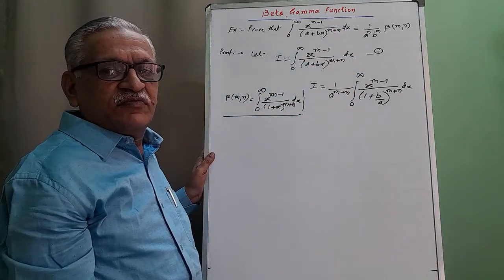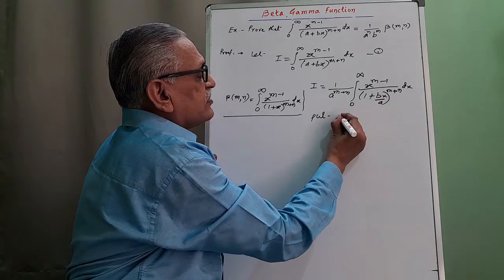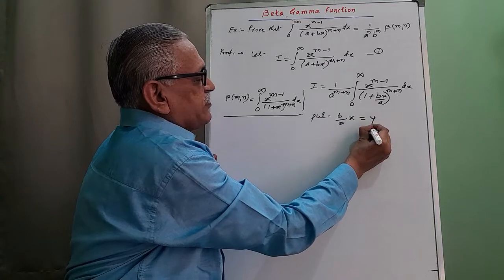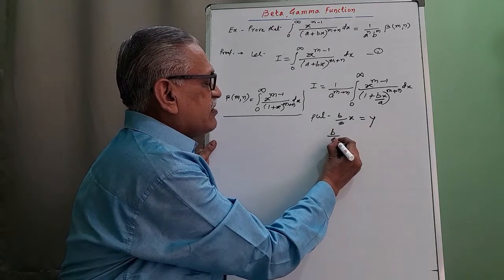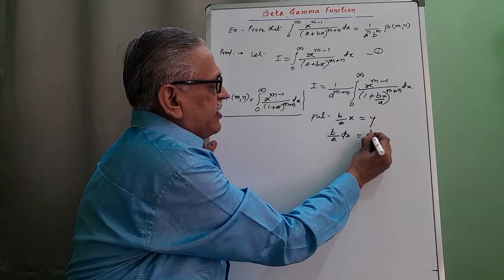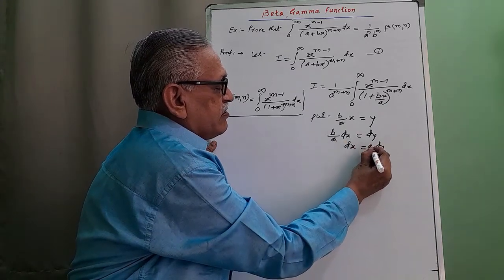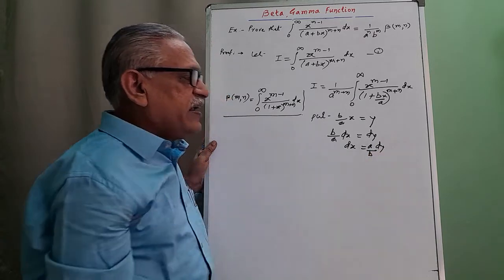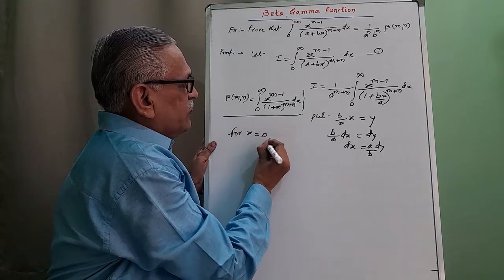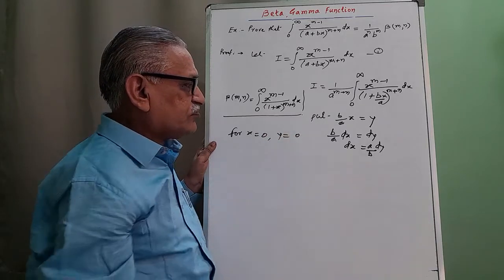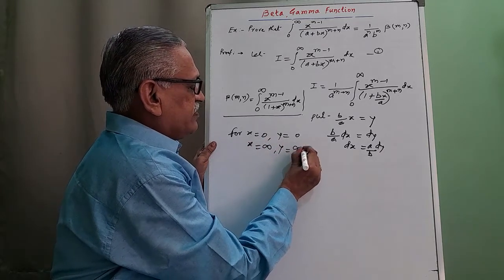To obtain the required result, we put b by a times x equal to y as a new substitution. Differentiating with respect to y, we get b by a times dx equals dy, and therefore dx equals a by b times dy. Finding new limits: when x equals 0, we get y equals 0; and when x equals infinity, we get y equals infinity — no change in the limits.